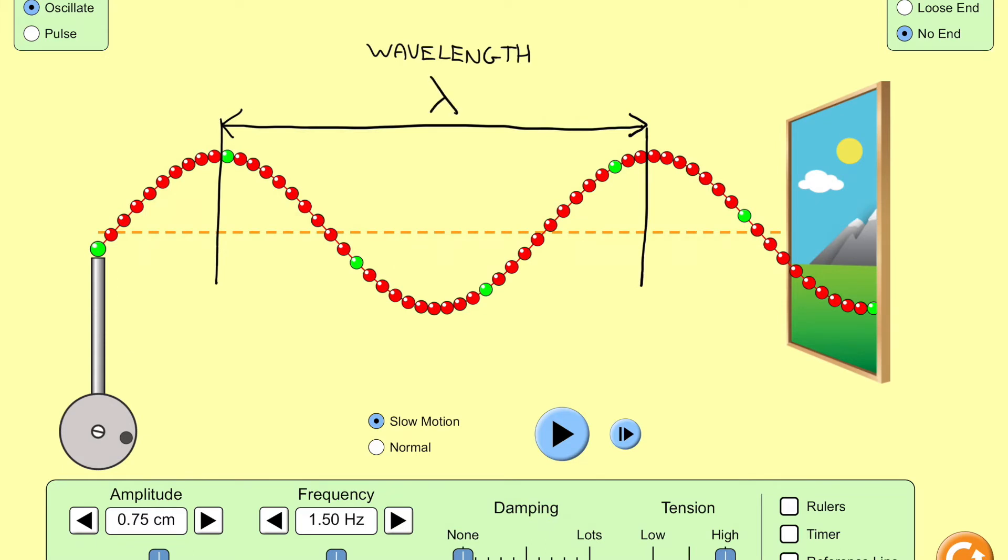To measure the wavelength you can measure the distance between two consecutive peaks or two consecutive valleys, or you can measure one full cycle of the wave where you have one peak and one valley, in other words before the pattern begins repeating itself.